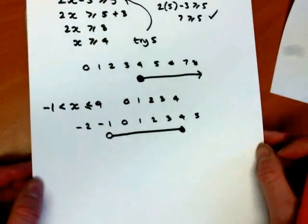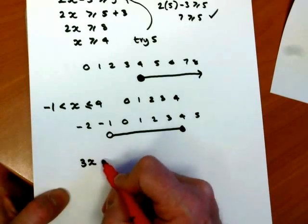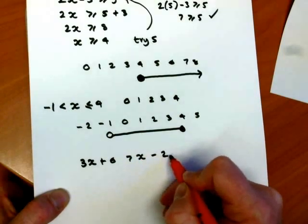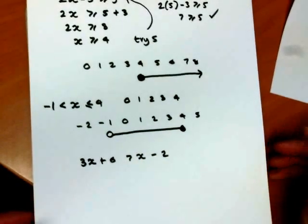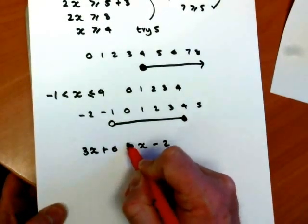Now we'll do one more inequality. Let's do 3x plus 6 is greater than x minus 2. So we've got an x on both sides this time. So what I want to do, just make that look more like a greater than sign.